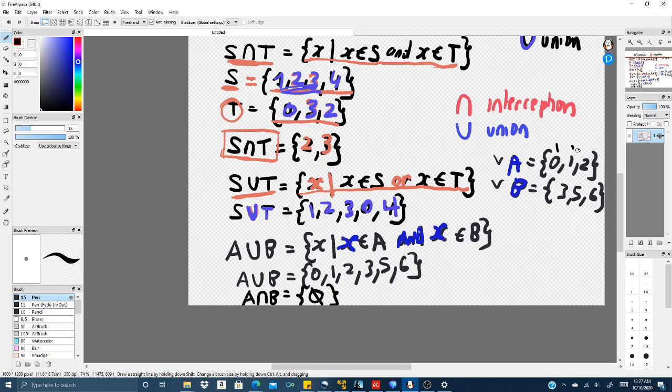But if we have C, for example {0,1}, if you have another problem A intercept C, the answer would have been {0,1}.